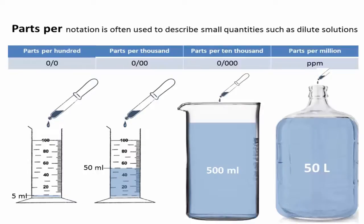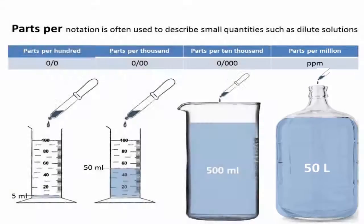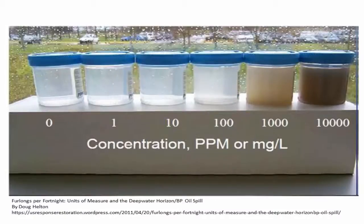Parts per million is the equivalent of one drop in 50 liters, and instead of a symbol it's designated as ppm. Will one drop of food coloring in 50 liters be visible? I leave it to you to find out. One part per million of oil dispersed in water isn't visible, and neither is 10 parts per million, based on this picture I found on the web.